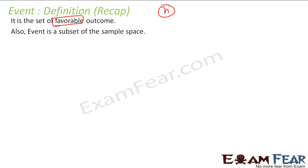We will define event also because we will learn a new topic called independent events. Event is nothing but set of favorable outcomes. For example, you throw a coin, you are looking for head, then your head is the event. That is the favorable outcome.